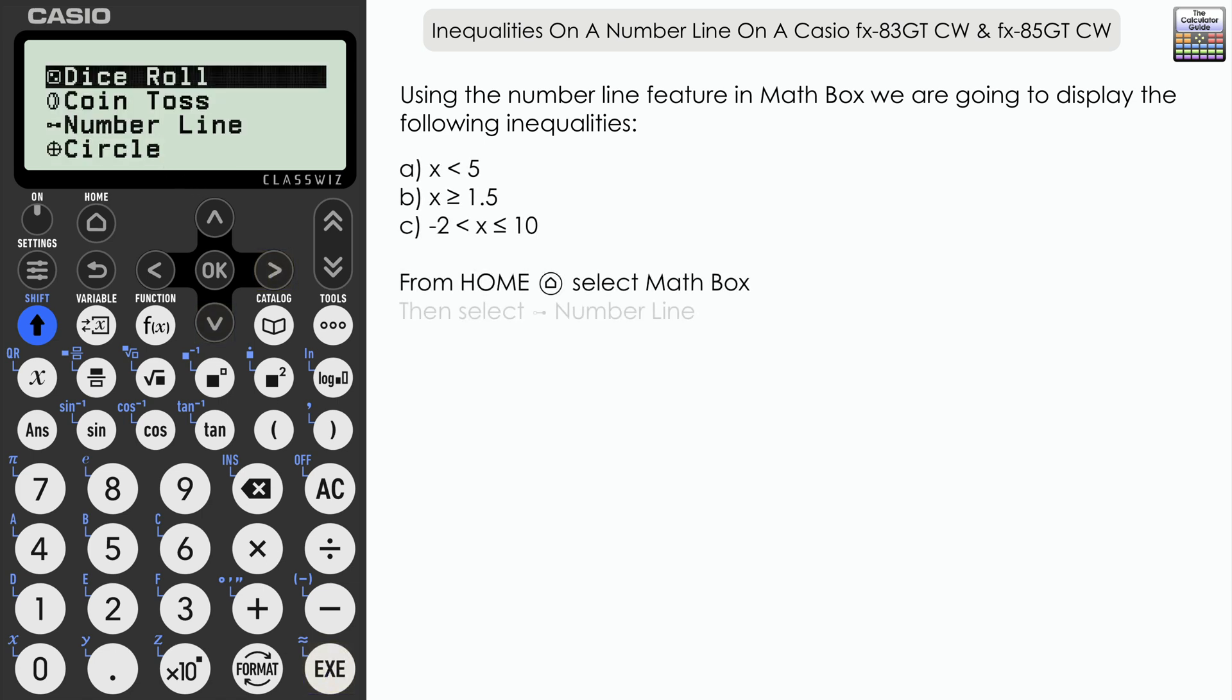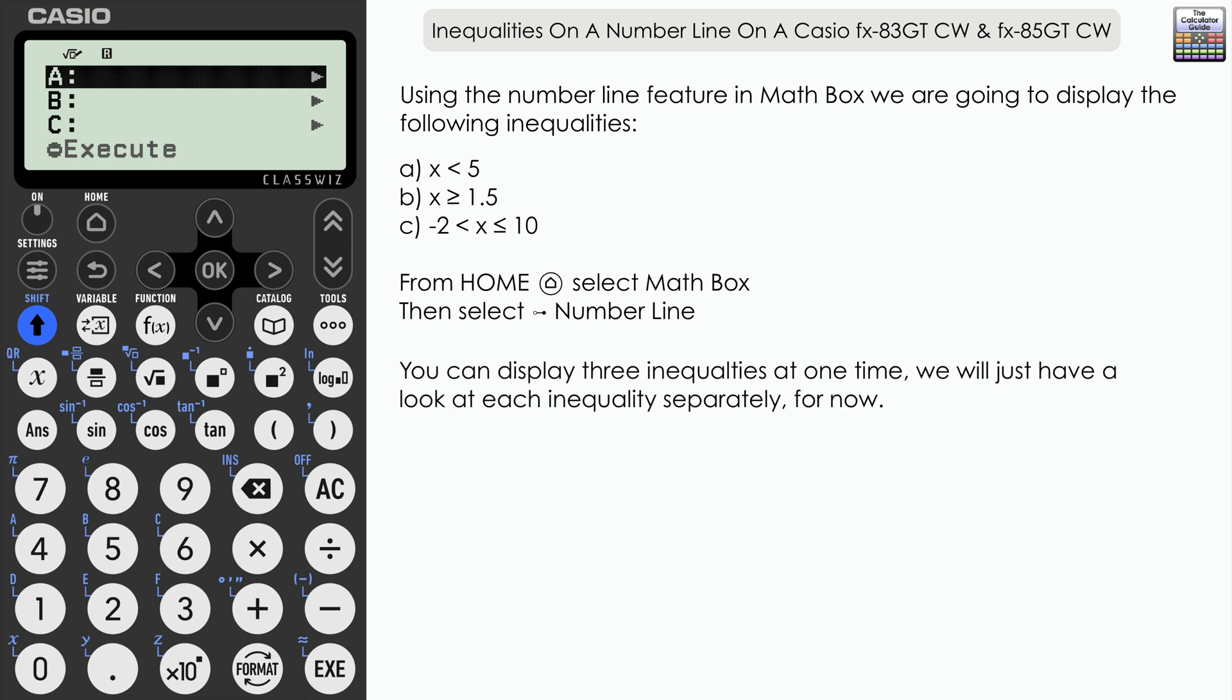And we want to select the third option down, number line. Now we can display three inequalities on a number line simultaneously: A, B, and C. I'm just going to display these separately as we go through, and then at the very end I'll display them all together on the screen. So let's just start off with the first one.